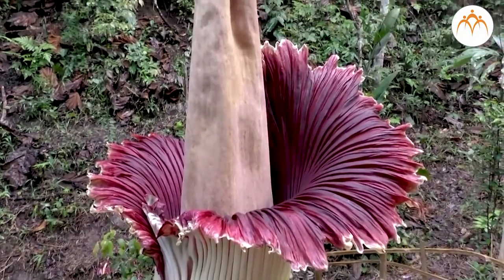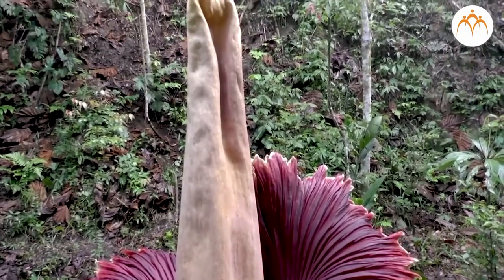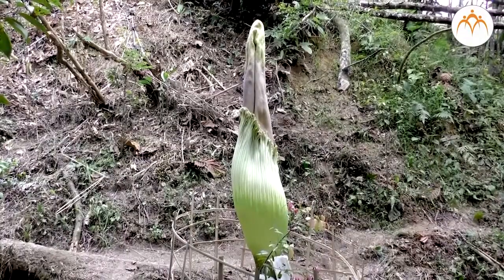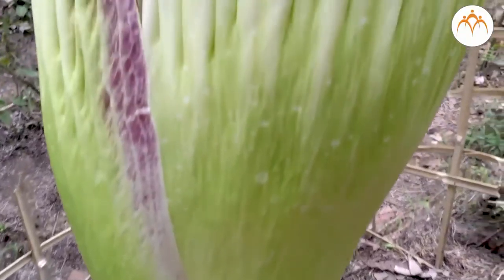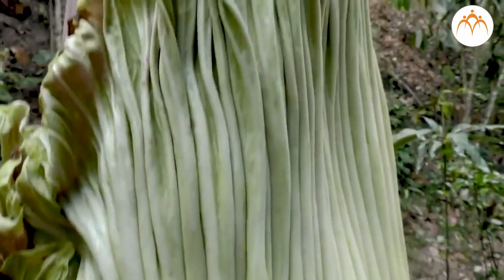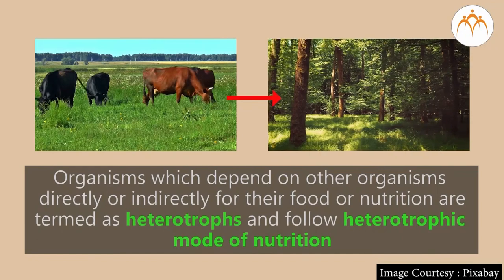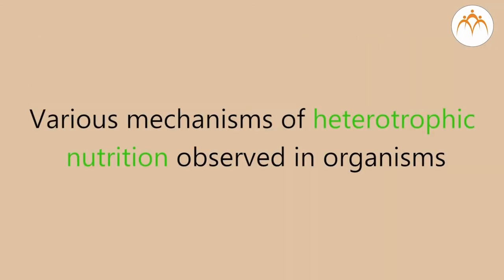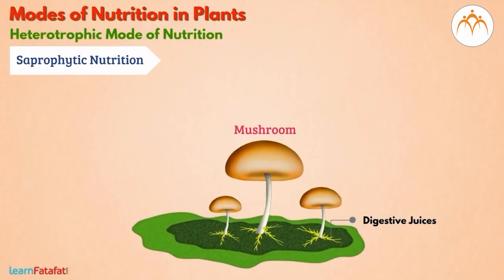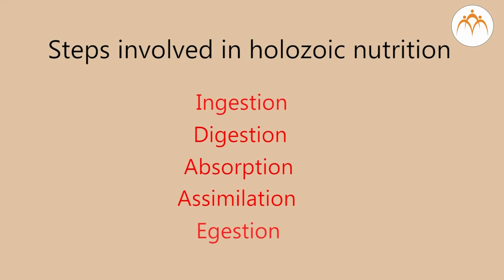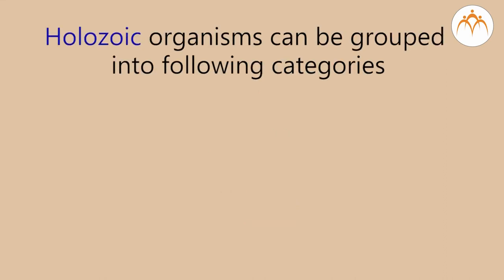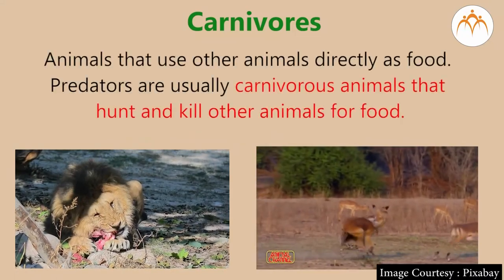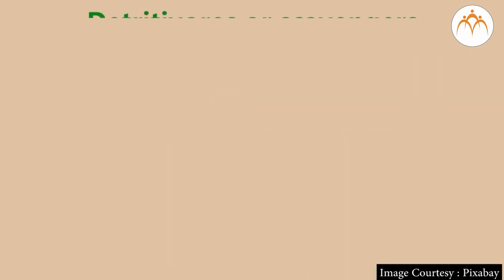It is interesting to note that a few plants which lack photosynthetic pigments also exhibit parasitic nutrition. Can you find examples of such plants? That brings us to the end of this session. Let us quickly revise everything we have covered: the concept of heterotrophic nutrition with examples; various mechanisms or modes of heterotrophic nutrition such as holozoic, saprozoic and parasitic; steps involved in holozoic nutrition; and different categories of holozoic organisms namely herbivores, carnivores, omnivores and detritivores.